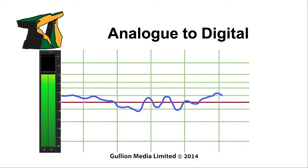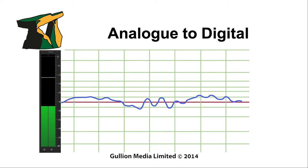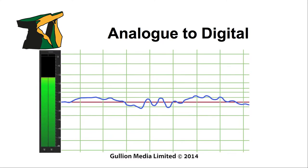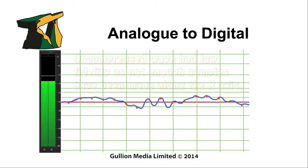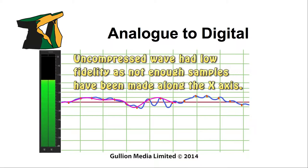Digital is basically a series of ones and zeros. To do this, the digitization process has to sample the sound wave in such a way during compression that when the signal is decompressed, it represents the original sound wave with high fidelity.